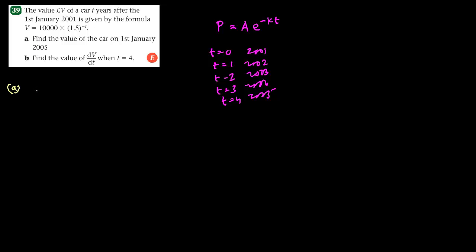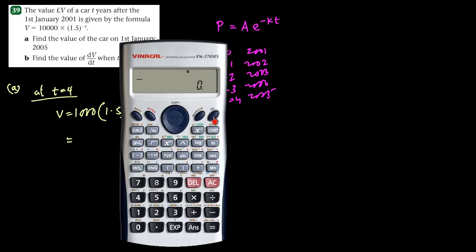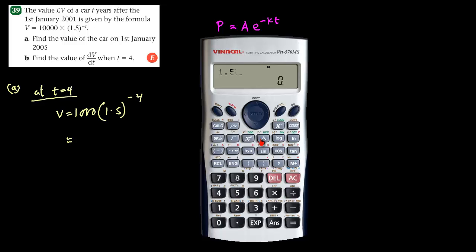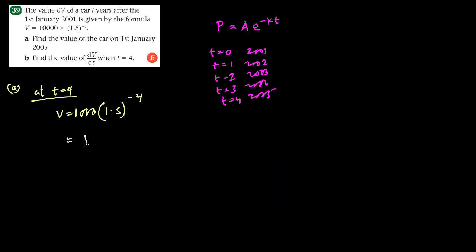So all we have to do is at t equals to 4, find the value of v: 1000 times 1.5 to the power minus 4. Using the calculator, 1.5 to the power minus 4 multiplied by 1000 gives us 197.5. So the value should be £197.5.